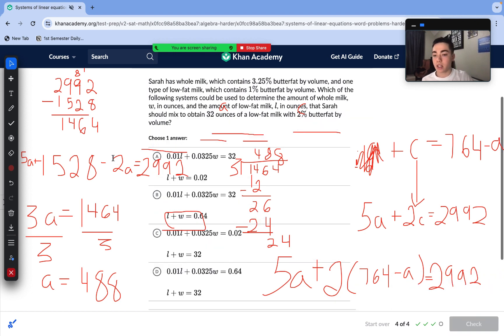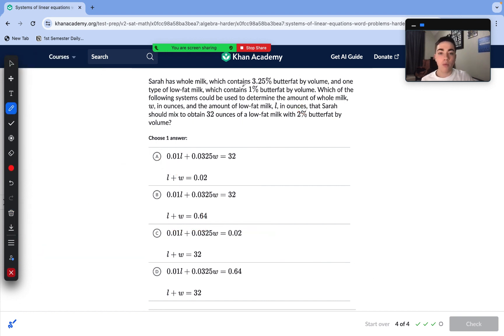On to our last question. Sarah has whole milk, which contains 3.25% butterfat by volume, and one type of low-fat milk, which contains 1% butterfat by volume. Which of the following systems can be used to determine the amount of whole milk W in ounces and the amount of low-fat milk L in ounces that Sarah should mix to obtain 32 ounces of low-fat milk with 2% butterfat by volume? So here we just need to set up our systems of equations.